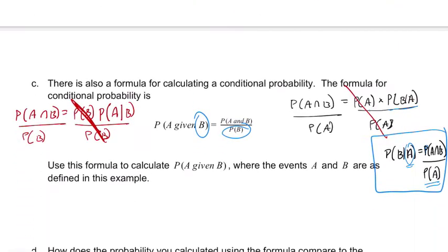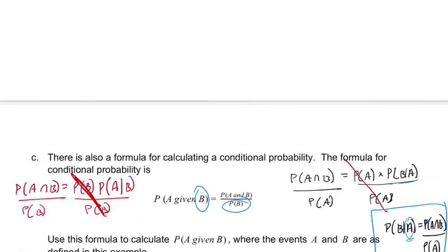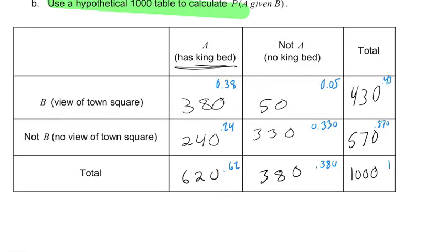So they're asking you to find the probability of A given B. So let's do that. So the probability of A given B is in the table. We can see this. We're given B. So we're given that we're in this row and that you have a view of the town square. That is the given. So out of the 430 people or rooms that have that view, we now want to know how many of them have the king bed.